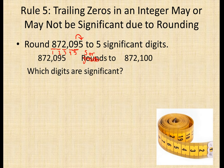We ask ourselves: if we've put it to five significant digits, which digits are significant? We have 8, 7, 2, 1, and 0 — because we rounded to that fifth place, the fifth significant digit, so the zero is significant.